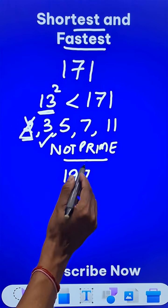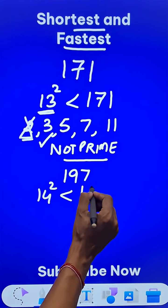Likewise, suppose you have 197. Now 14 squared, 196, is just close to 197.